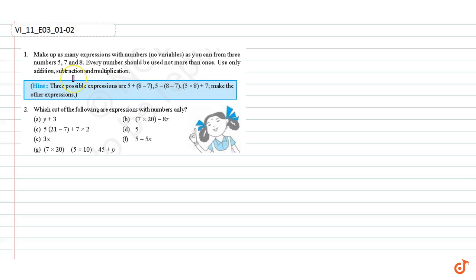In this video we are going to solve question number one and two. Question number one: make as many expressions with numbers — no variables — as you can from the three numbers 5, 7, and 8. Every number should be used not more than once. Use only addition, subtraction, and multiplication. Three possible expressions are: 5 plus 8 minus 7, 5 minus 8 minus 7, and 5 into 8 plus 7.